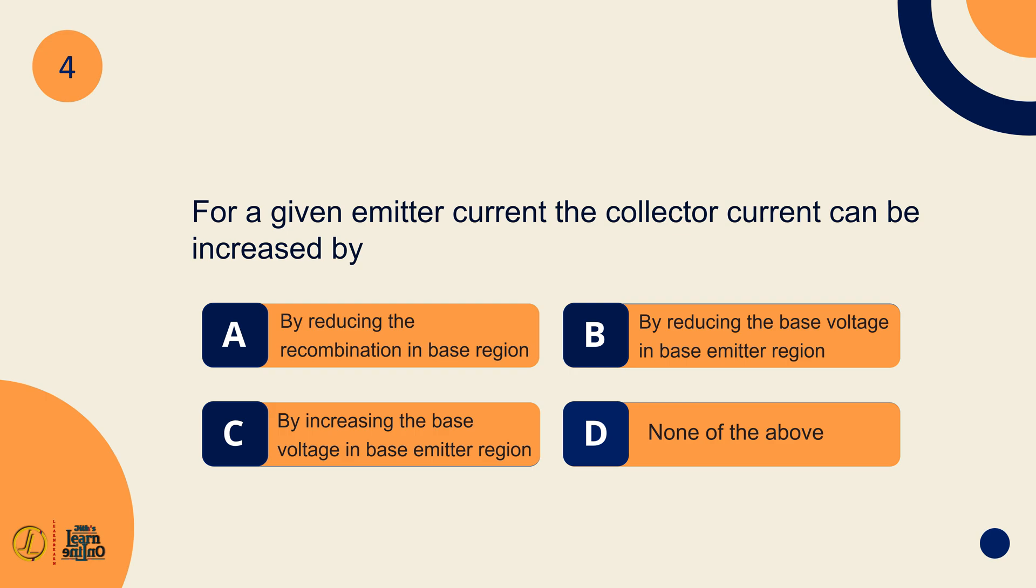For a given emitter current, the collector current can be increased by reducing the recombination in base region.